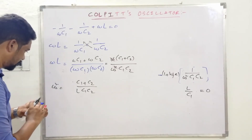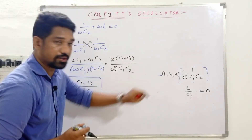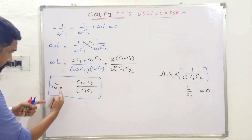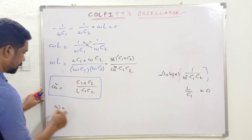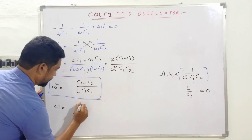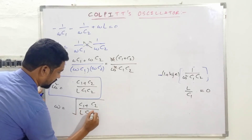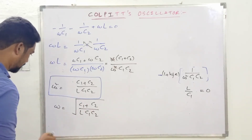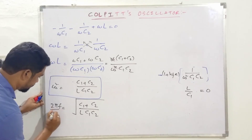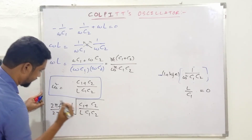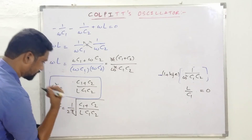This is an important equation. Taking square root on both sides: ω = √[(C1 + C2)/(L·C1·C2)]. Since ω = 2πf, the frequency of oscillations is: f = (1/2π) × √[(C1 + C2)/(L·C1·C2)]. This is the expression for the frequency of oscillations of a Colpitts oscillator.